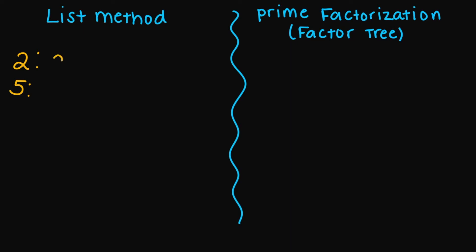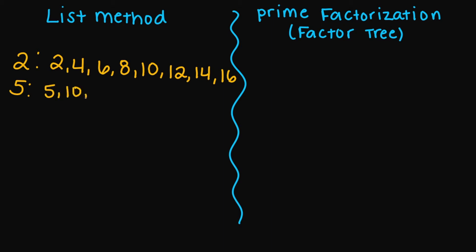So for two, we have 2, 4, 6, 8, 10, 12, 14, and 16. For my five, we have 5, 10, 15, 20, 25, and we'll stop here for now. The least common multiple — the smallest common multiple that both of these numbers share — is going to be the number 10. So your LCM is 10.